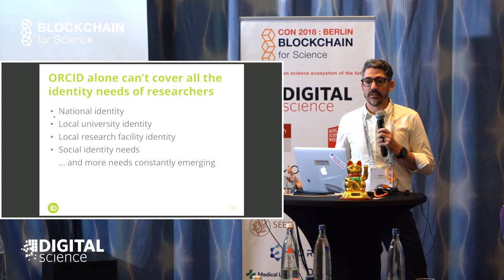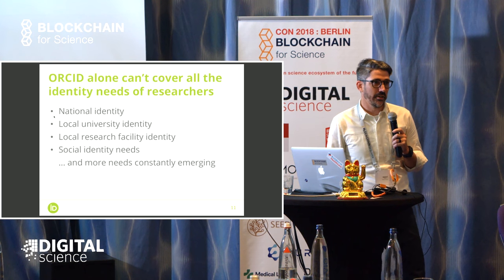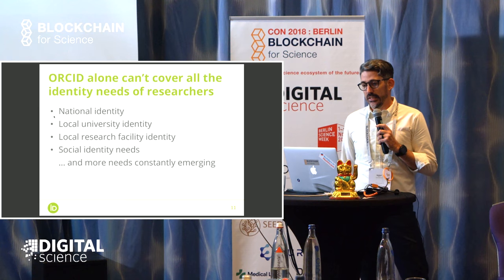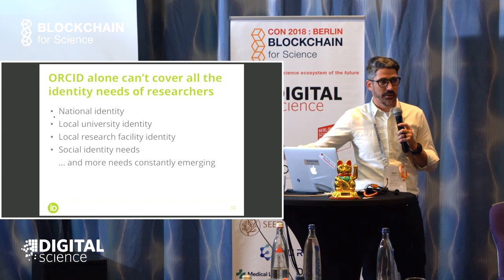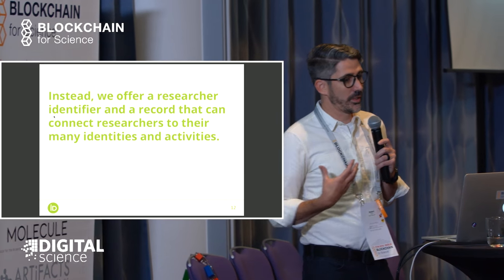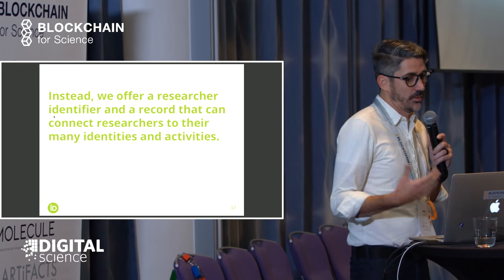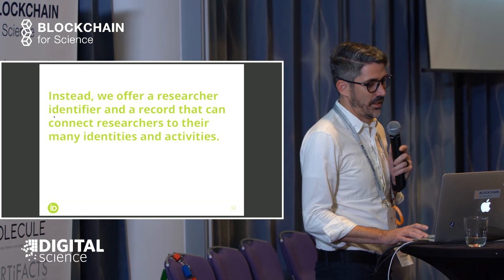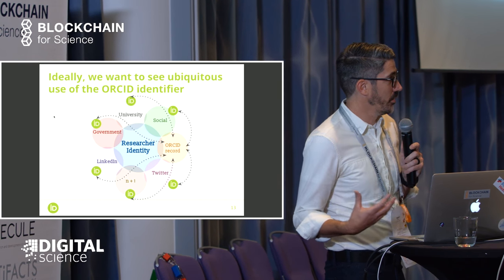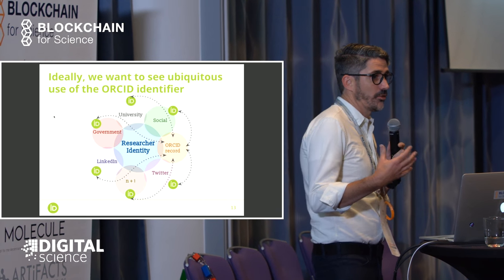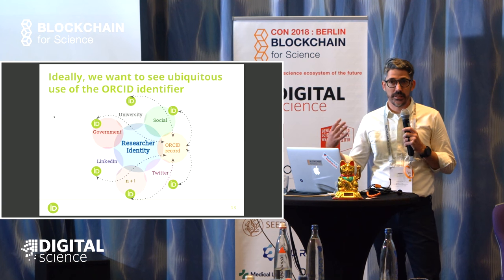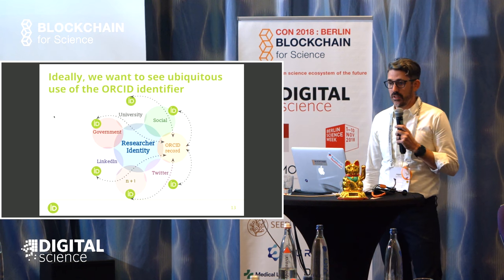We really need the community to kind of address all the different types of identity needs. Just to name a few: how do you correctly credential somebody's national identity, local university identity, and their social identity needs? There's a lot of problems there that ORCID's actually never going to directly approach. So instead, what we do is we offer a researcher identifier and a record that can help connect researchers to their many identities and activities. We'd really like to see the ORCID identifier used to help attribute metadata in all these systems out there, and then have that metadata point to the ORCID record — and ideally vice versa.